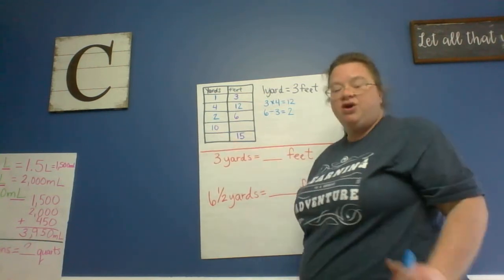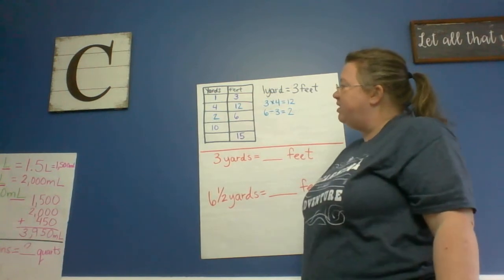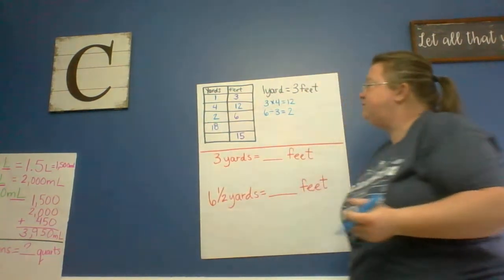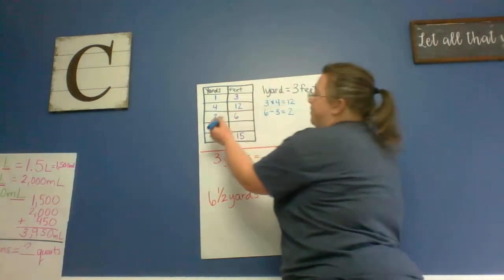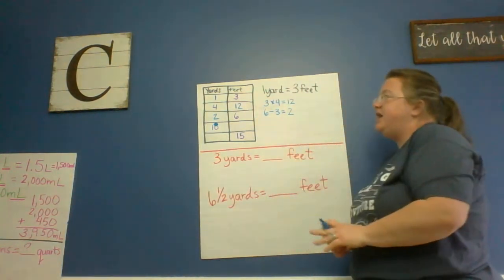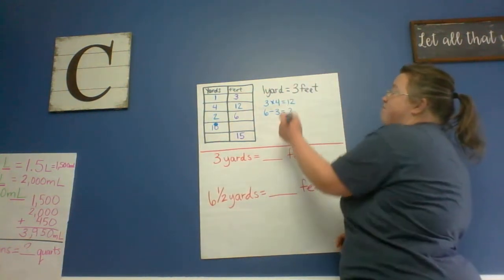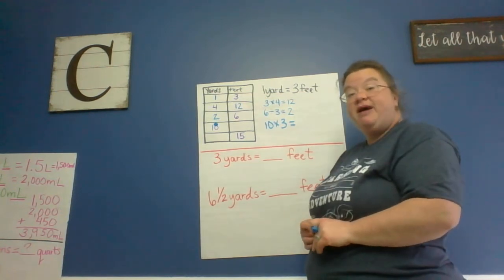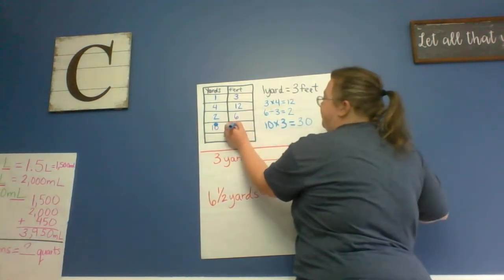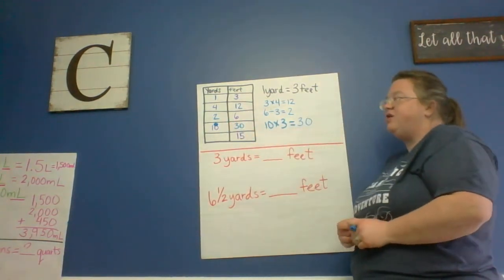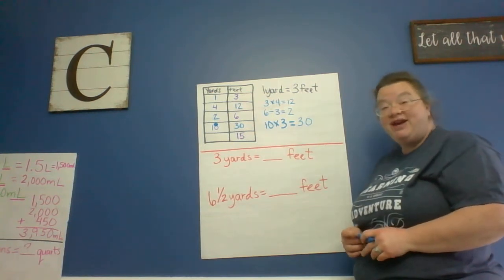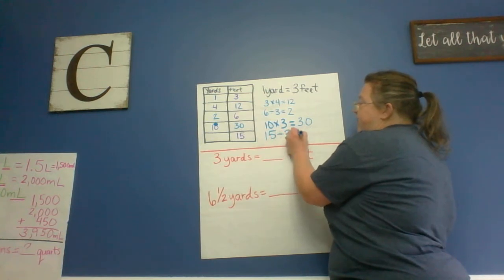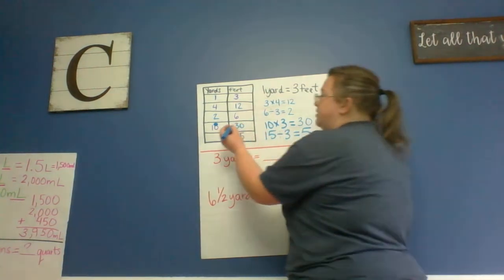10 yards. If we have 10 yards, we need to multiply that by three because there are three feet in each of those yards. So we multiply three by 10 and we get 30. So there are 30 feet in 10 yards. And finally, if we had 15 feet, how many yards would that be? Remember, we have more feet than yards. So we need to divide our feet by three to get our yards. So if we had 15 feet, we have five yards.